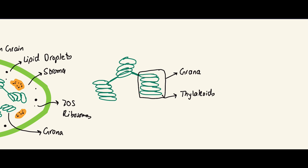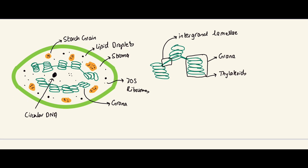The connections between grana are called intergranule lamella — also known as intergranule thylakoids. I want you to be familiar with this term because in paper two they may give you a diagram and ask you to name everything. I'd encourage you to pause the video and try to label all the structures yourself.